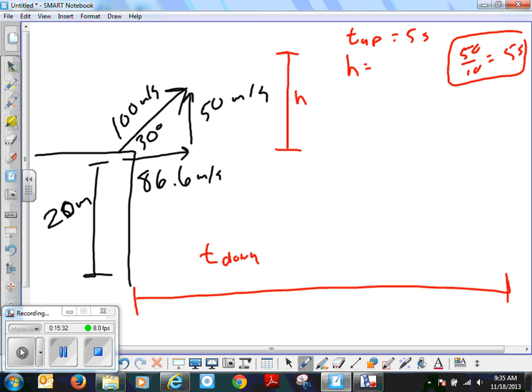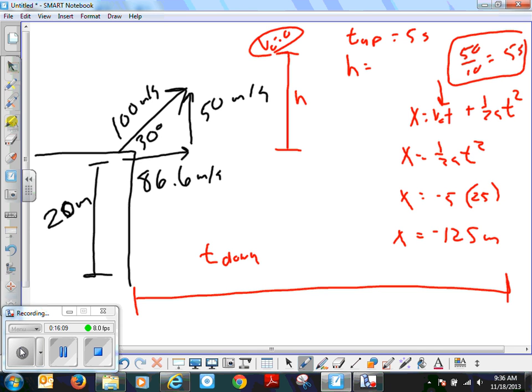The height up then we could use x equals v sub 0 t plus 1 half at squared. And you can just zero this out right here, because you know up here, v sub 0 equals 0. So then x is 1 half at squared. x is negative 5 times 25. So x comes out to negative 125. But it's really positive, because we went up here, called that v sub 0. So it's actually plus 125. That's how high it is.